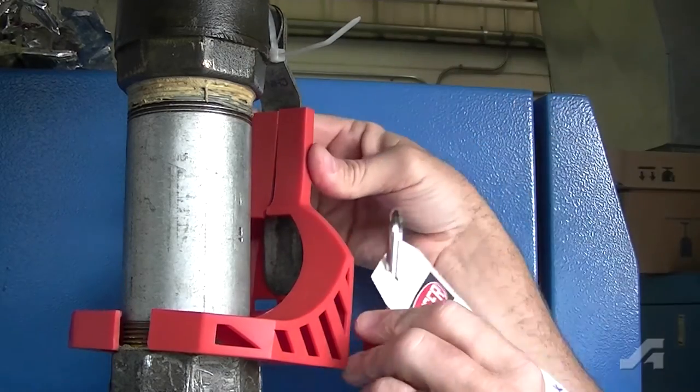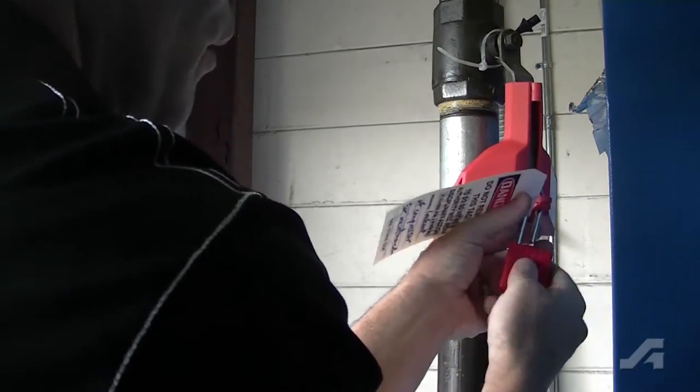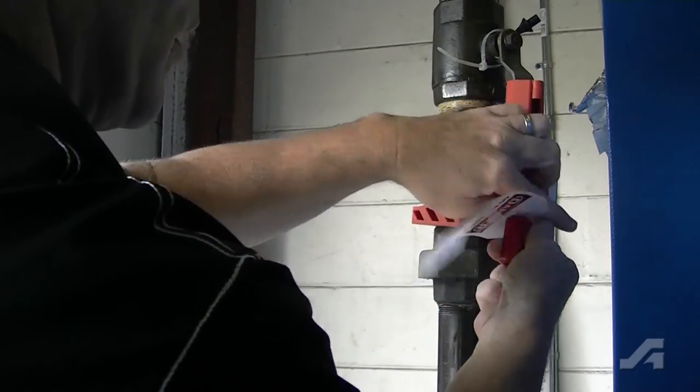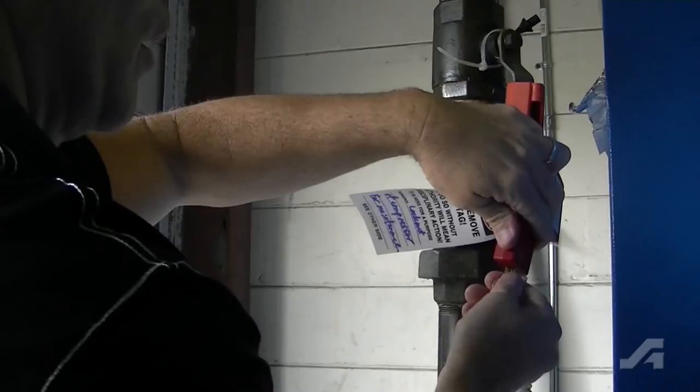Just open the jaws of the device, wrap around the valve stem, then close and lock by inserting a padlock and lockout tag, both sold separately.